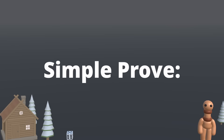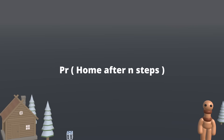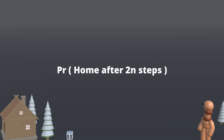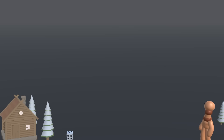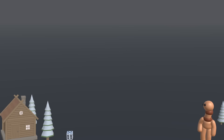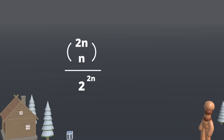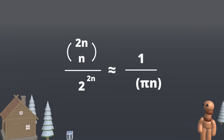Here's a simple proof. Let's calculate the probability of the pawn being at home after 2n steps — because it can't land home after an odd number of steps. If the pawn is home after 2n steps, it means he got exactly n heads and n tails in his coin flips. The number of those sequences is 2n choose n, and there are 2 to the 2n possible sequences, so from here we get the probability of returning in 2n steps.